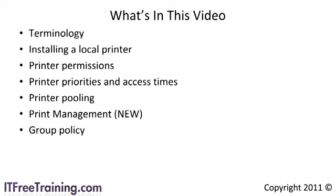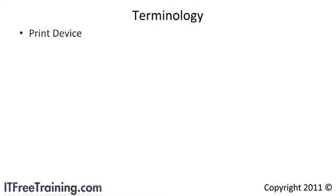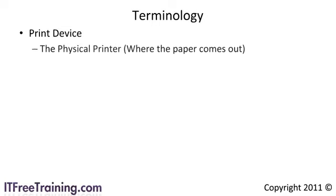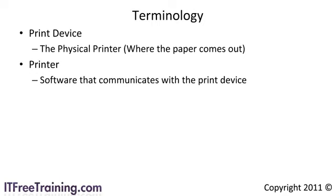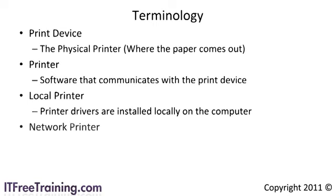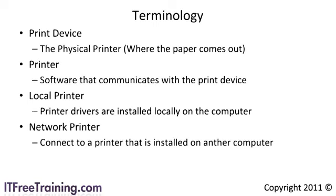To understand how printing works in Windows, it helps to understand a little terminology first. Microsoft does not call a printer a printer — Microsoft calls a printer a print device. Think of the print device as being the physical printer, or the device the paper comes out of. Microsoft instead refers to a printer as the software that communicates with the print device. Depending on where the software is installed will determine if the printer is a local printer or a network printer.